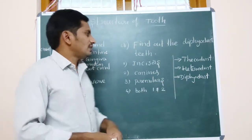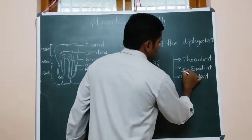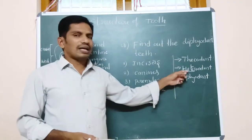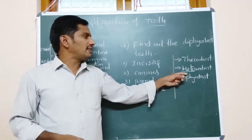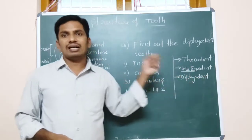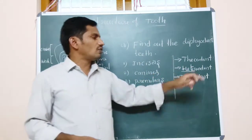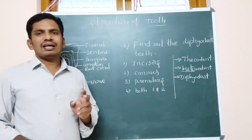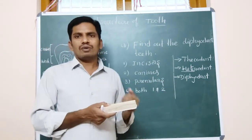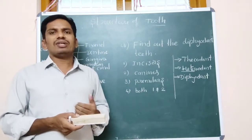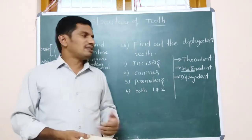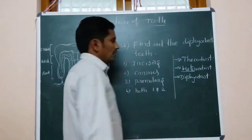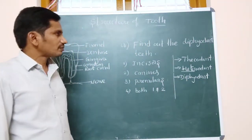Heterodont means they have different types — 4 kinds of teeth are present, which is why they are called heterodont. Hetero means different. Diphyodont means 2 times — the teeth we have in childhood, the milk teeth, will be replaced by the permanent teeth. That's the reason our teeth are termed diphyodont.